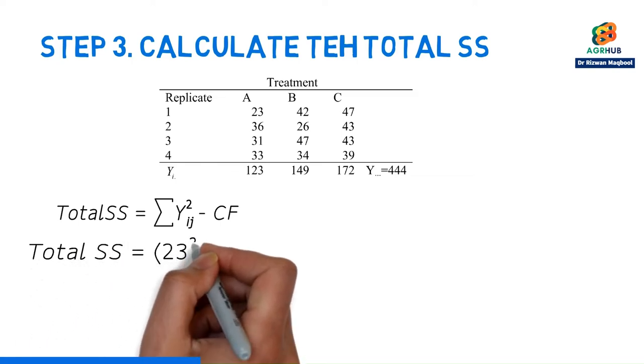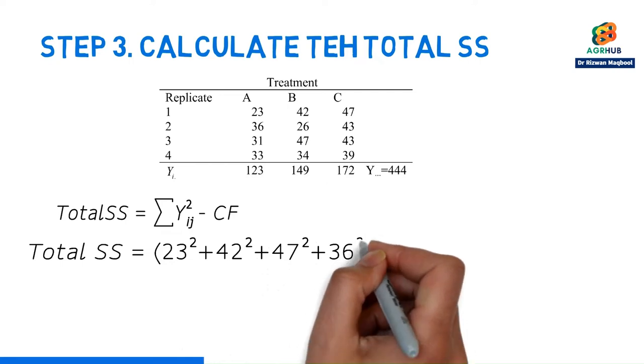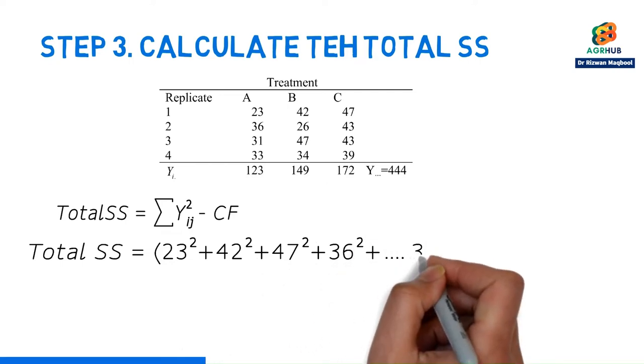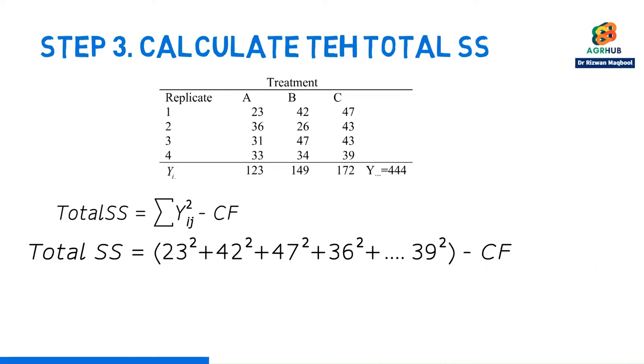23 squared plus 42 squared plus 47 squared plus 36 squared plus 26 squared plus 43 squared plus 31 squared plus 47 squared plus 43 squared plus 33 squared plus 34 squared plus 39 squared. Even though it's easy to do conceptually, it takes a lot of time. So, I've actually done it for us already and I'll give us that answer.